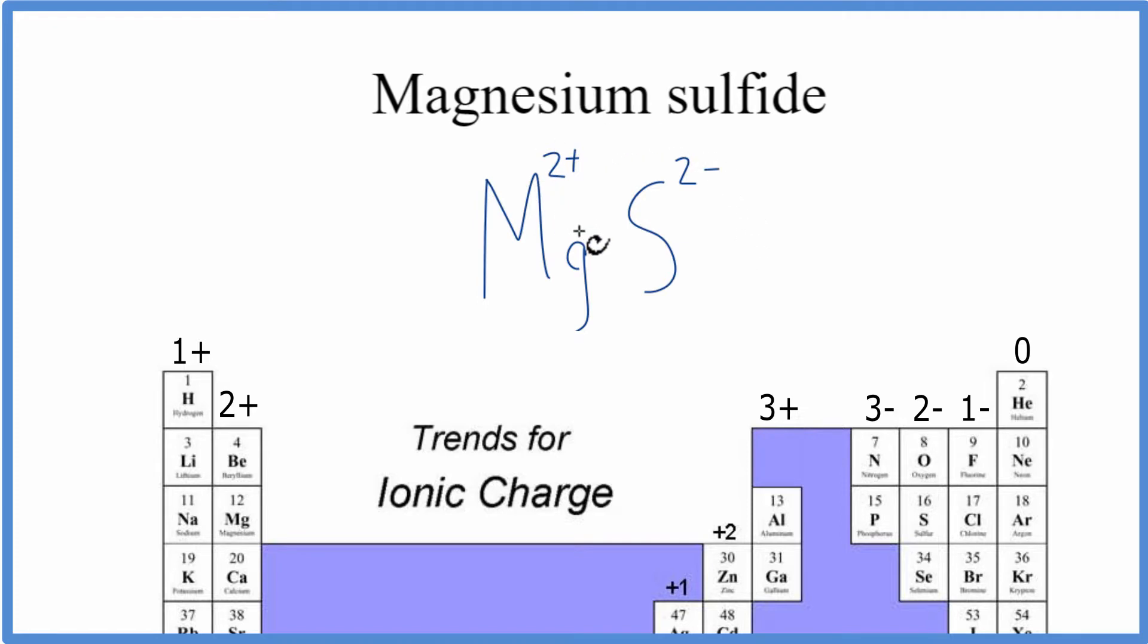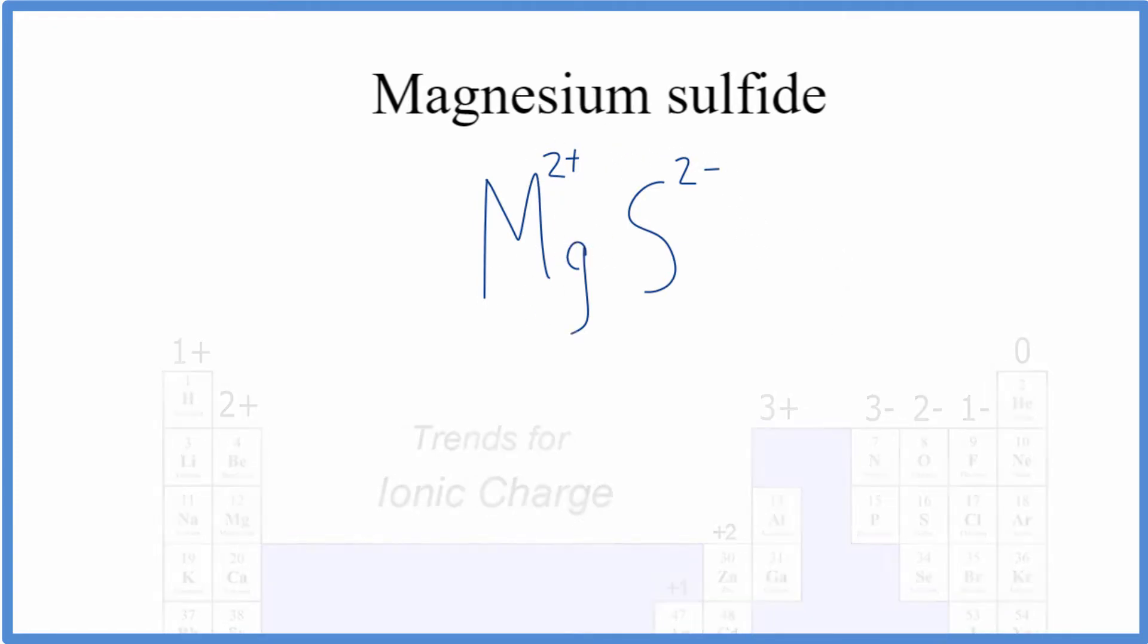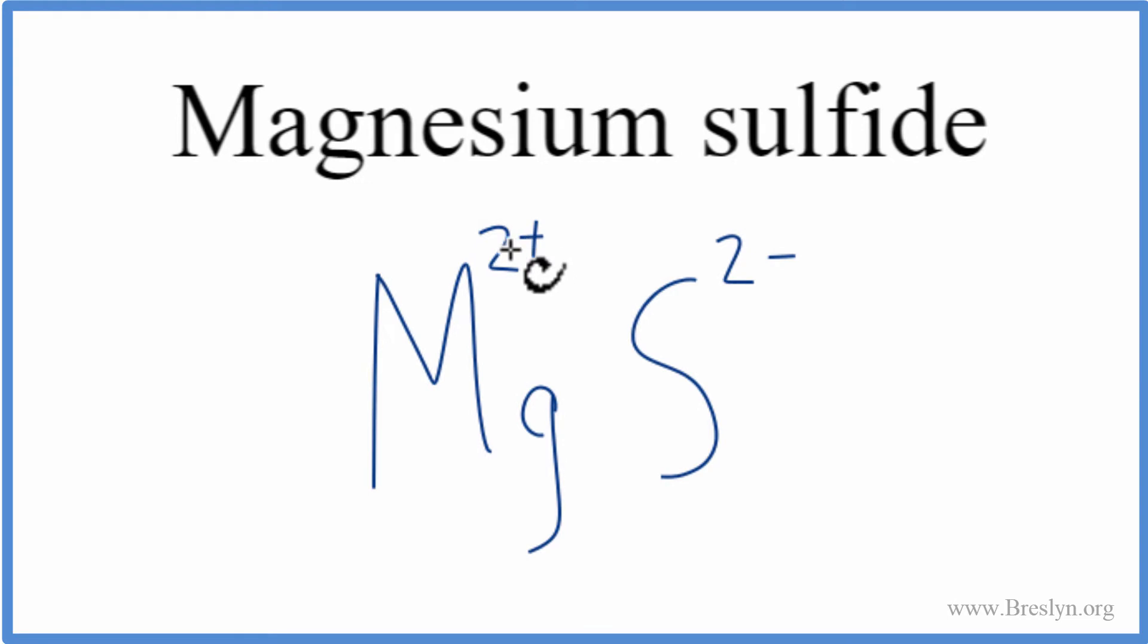And these charges, they need to add up to zero. We need a net charge for the compound of zero. So the 2 plus and the 2 minus, they do add up to zero. That makes MgS the correct formula for magnesium sulfide.